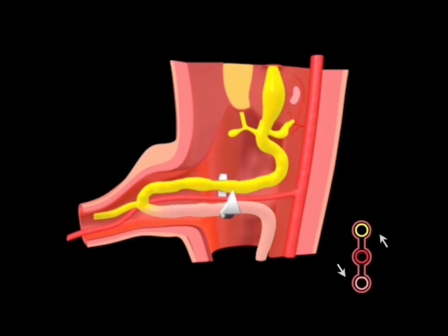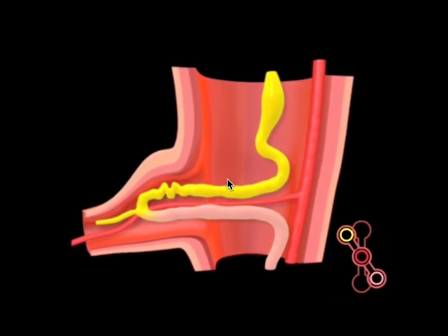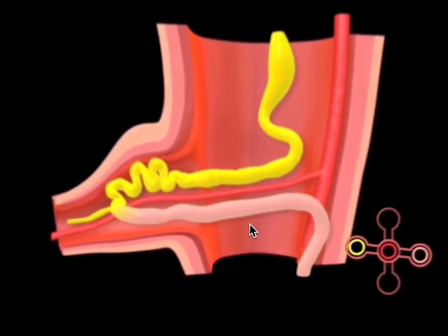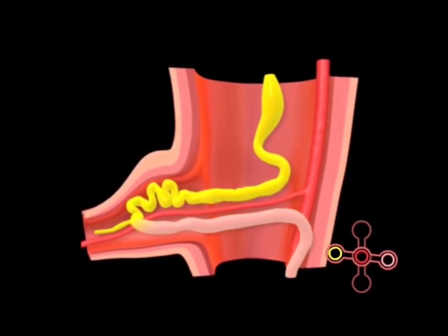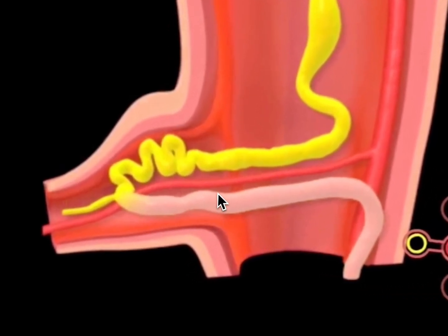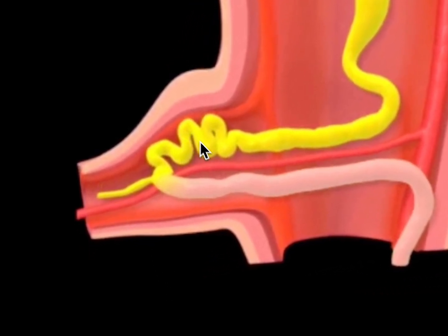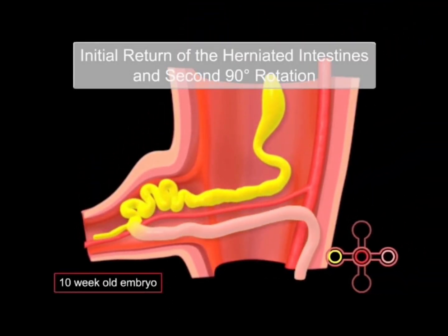Now begins the rotation of the midgut loop, starting in the umbilical cord. By early week six, the midgut loop rotates 90 degrees counterclockwise, with the SMA providing the axis of rotation. After this initial 90-degree rotation, the caudal limb faces to the left and the cranial limb to the right. The caudal limb develops a cecal swelling at week six, forming the cecum and appendix, while the cranial limb forms loops and becomes convoluted.